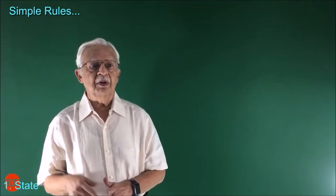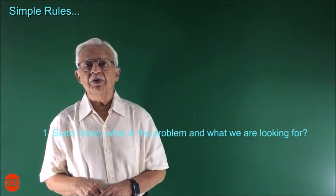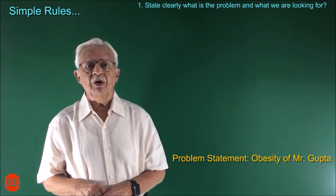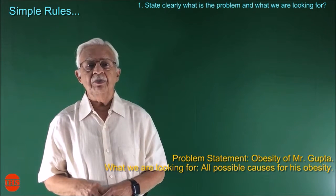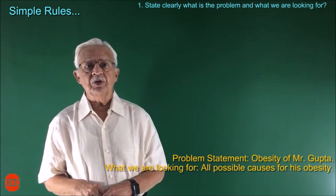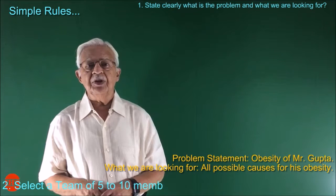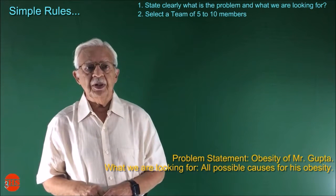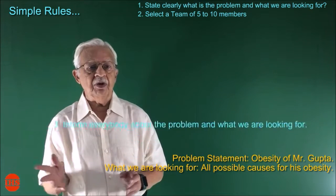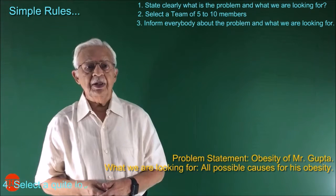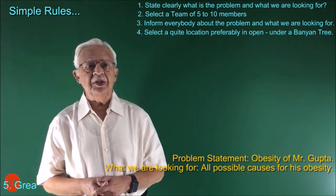Simple Rules: Rule 1 — State clearly what the problem is and what we are looking for. Problem statement: Obesity of Mr. Gupta. Rule 2 — Select a team of 5 to 10 members. Rule 3 — Inform everybody about the problem and what we are looking for. Rule 4 — Select a quiet location, preferably in the open under a banyan tree.